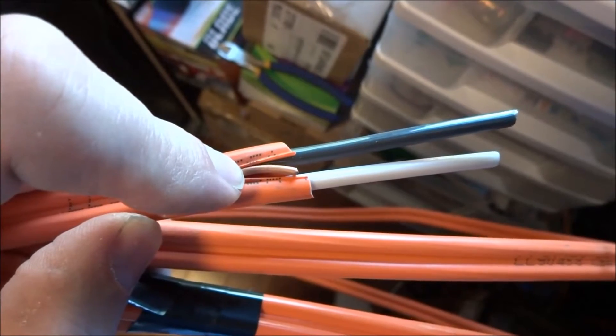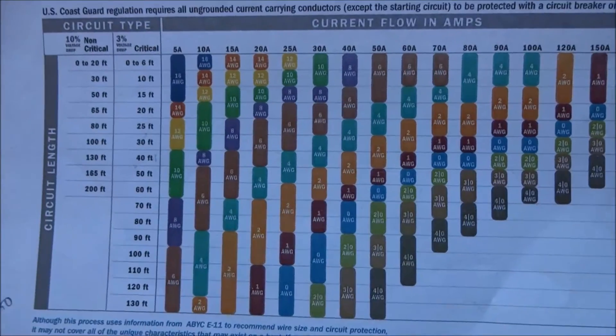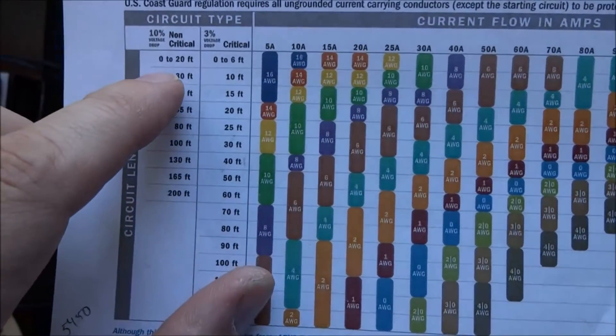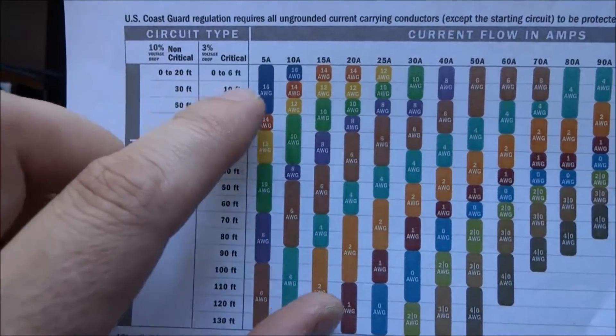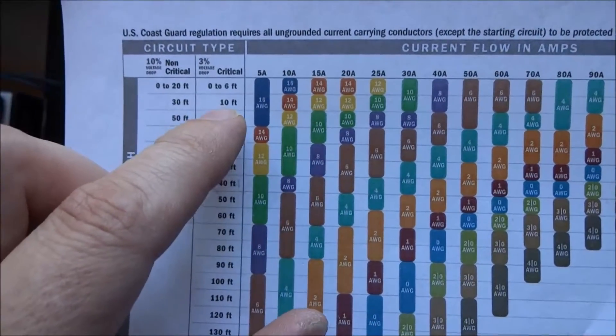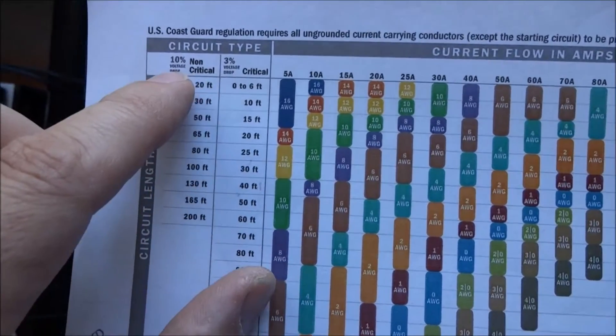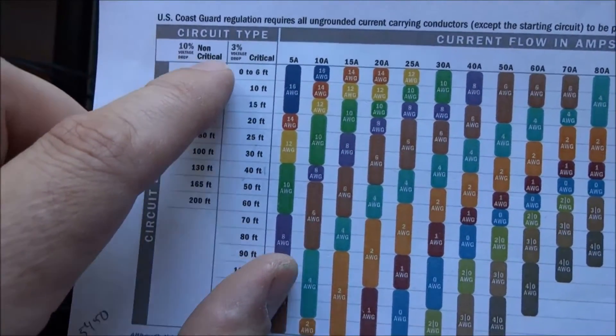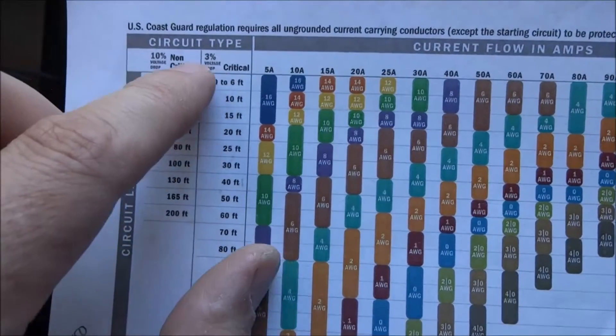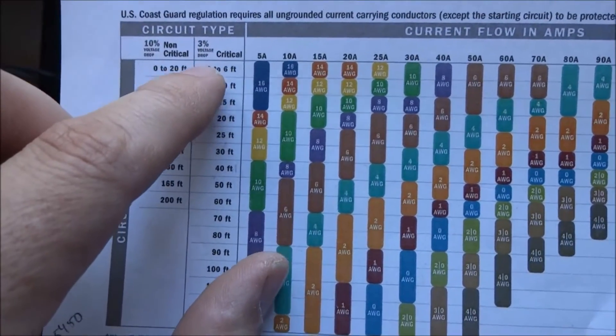I used a chart I found online that gives you the wire gauge required for a circuit. Non-critical means 10% voltage drop; critical is 3% voltage drop. I always like to keep the voltage drop as low as possible.